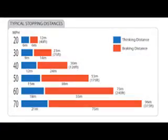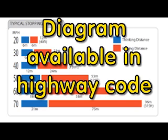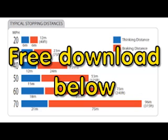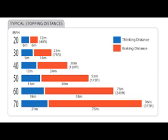I'm sure you're familiar with this diagram, which explains all about stopping distances. I'm going to break it down so it'll make a bit more sense. This diagram shows the speed limits from 20 miles per hour up to 70 miles per hour. It shows the overall stopping distance for each speed limit, as well as the thinking distance and the braking distance.